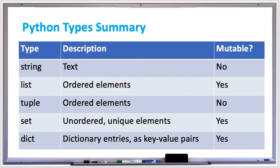The string type is used just for text. It's not mutable, meaning you cannot change it when you call functions that operate on strings. The list type is for ordered elements that is mutable. A tuple is for ordered elements that are not mutable.